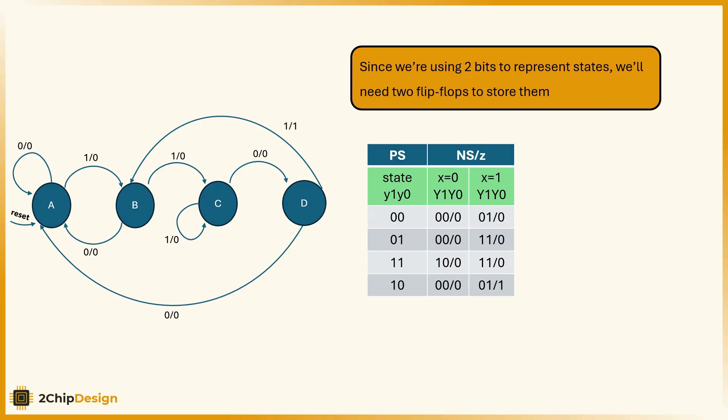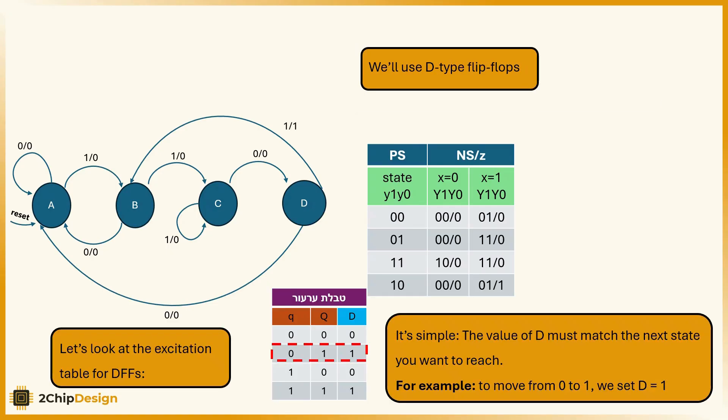Since we are using two bits to represent states, we will need two flip-flops to store them. We will use D type flip-flops.